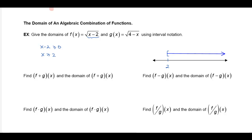Now let's also look at the function g of x. If I want the domain, the thing under the radical — the radicand — in this case 4 minus x, that has to be greater than or equal to 0. So when I solve this I'll add x to both sides: 4 is greater than or equal to x, or if we turn it around, x would be less than or equal to 4.